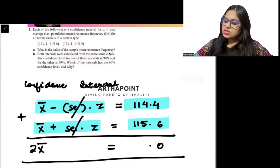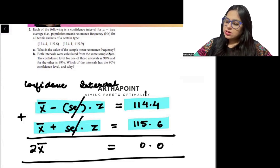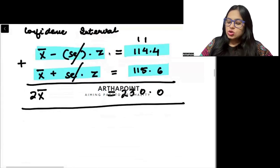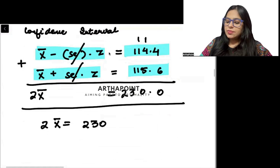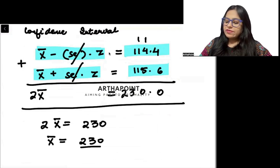And here I will get 10, 230. Here I will get 230. So 2 x bar will be equal to 230. So x bar will be equal to 230 divided by 2 which will be 115.